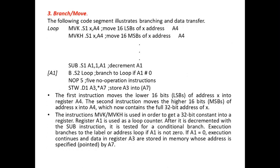The next common instruction is branch or move. Using MVK and MVKH, the first instruction moves the lower order bits of address X into register A4, and then the second instruction moves the higher order 16 bits of address X into A4. Finally, A4 contains the full 32-bit address of X. The MVK and MVKH instructions are used together to get a 32-bit constant into a register.